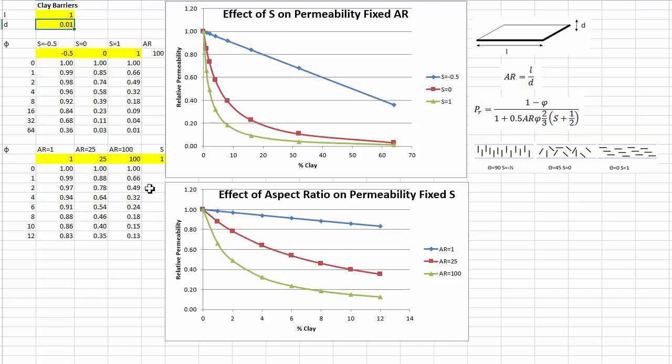Similarly we can look at how the aspect ratio affects things in the second plot. So assuming we've got the well aligned s equals 1, then when the aspect ratio equals 1, i.e. spherical particles, when we've added 12 percent we've only reduced the permeability by about 20 percent. So spherical particles are very poor at providing barriers.